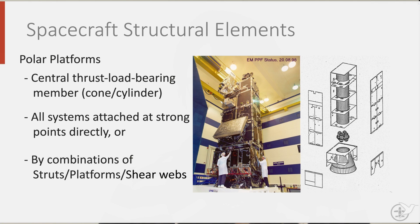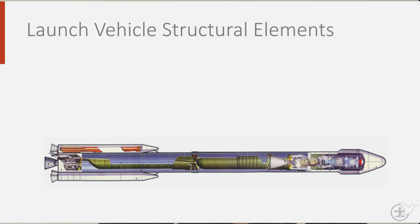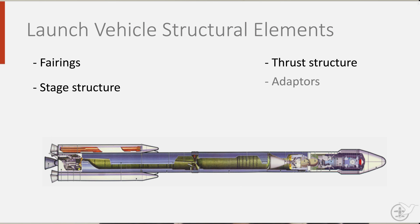An example of such a polar platform spacecraft is the MVISAT satellite, which has a cylindrical shell, as you can see here. If we take a good look at a launch vehicle such as this one here, we can distinguish four main structural elements: the fairing, the stage structure, the thrust structure, and the adaptors.